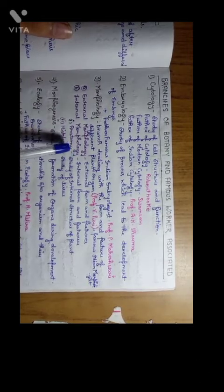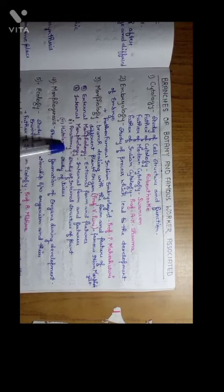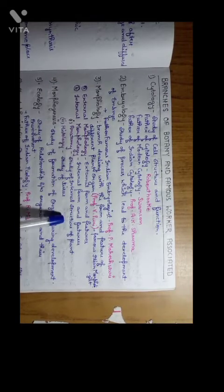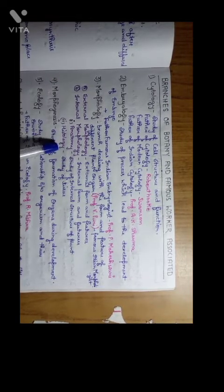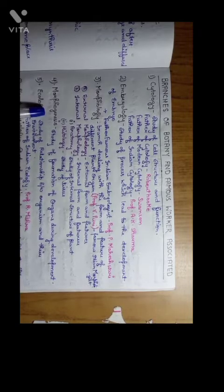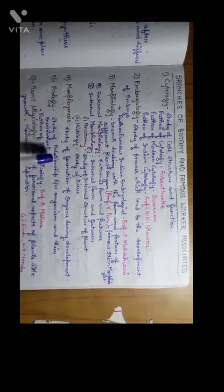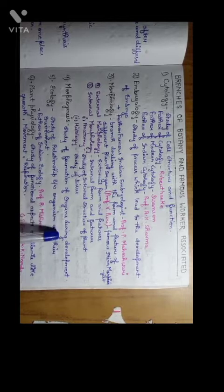Internal morphology includes two types: anatomy and histology. Anatomy is the study of internal structure of plant and histology is the study of tissue. Morphogenesis - it is the study of formation of organs during development.